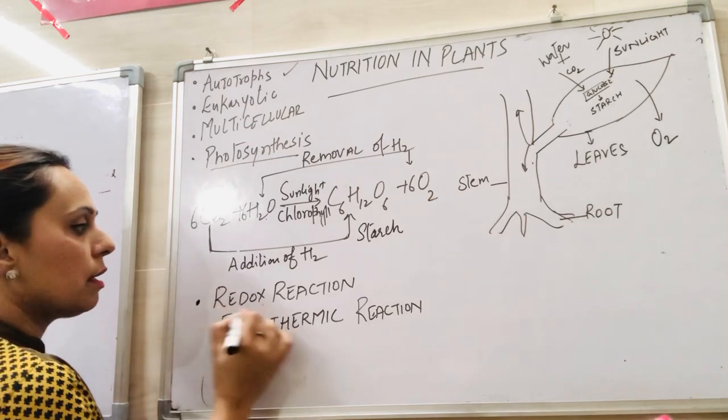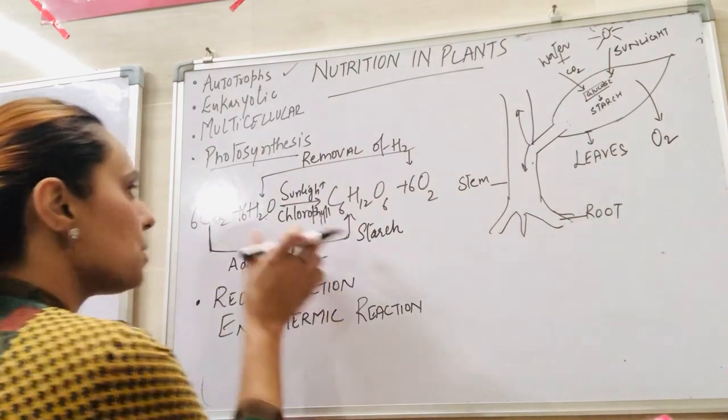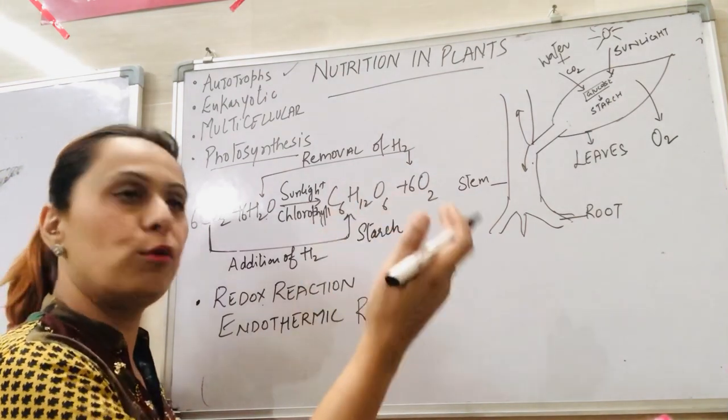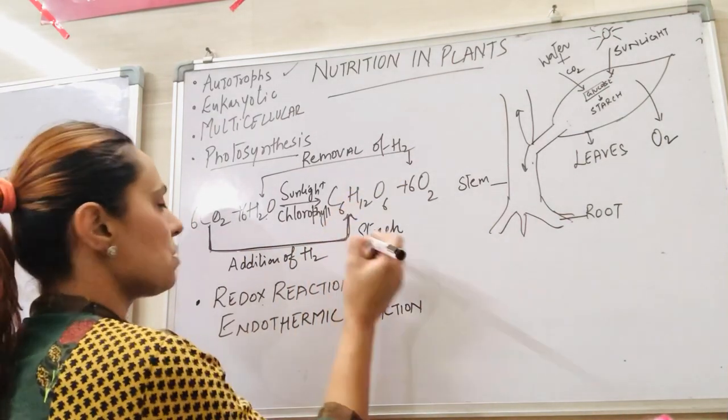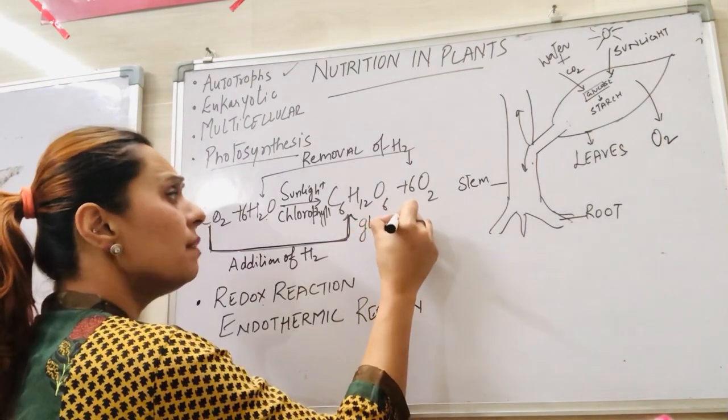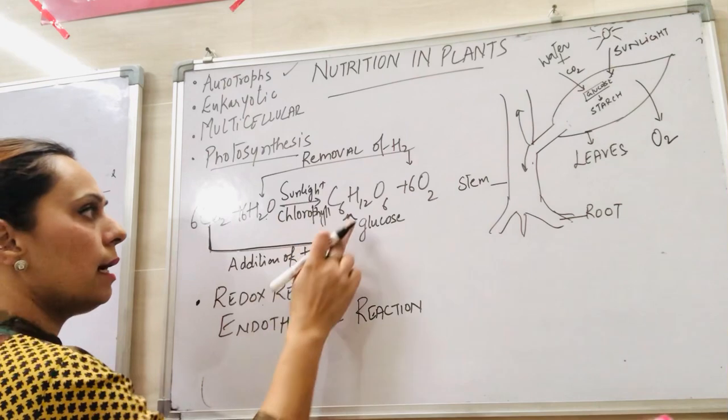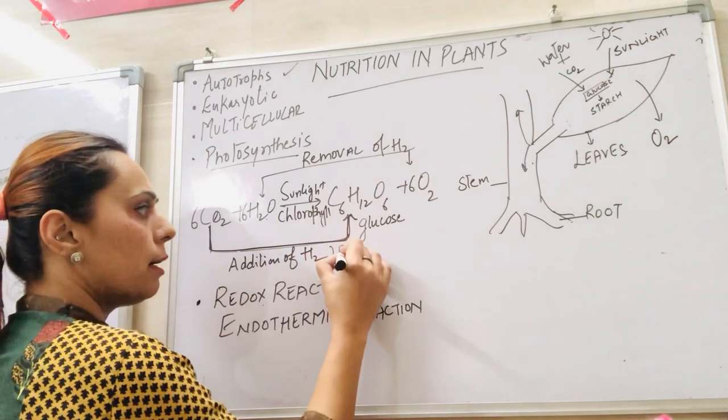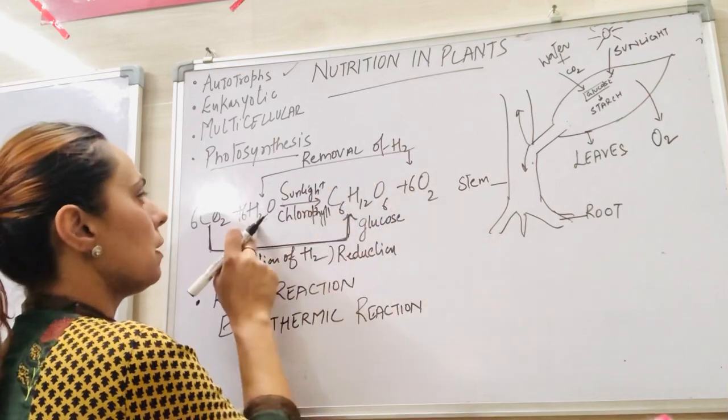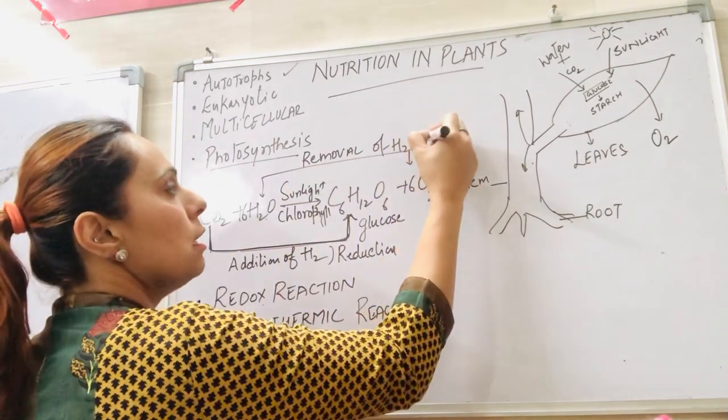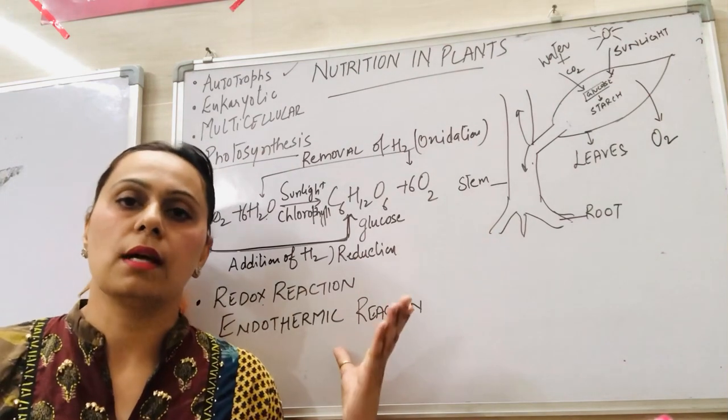In the photosynthesis reaction, it is a redox reaction. We all know what redox reaction means, in which the reduction as well as oxidation takes place side by side. Reduction is the addition of hydrogen or the removal of oxygen. So in this we see that carbon dioxide is reduced to form a glucose molecule. So it is a reduction reaction. The removal of hydrogen is an oxidation reaction.